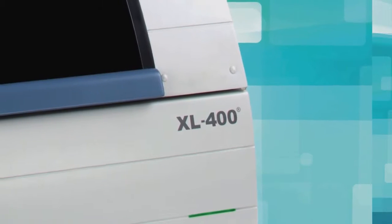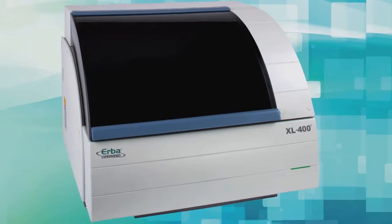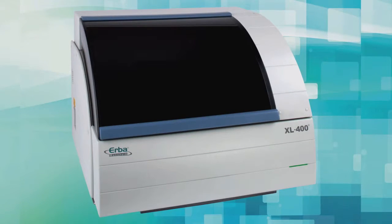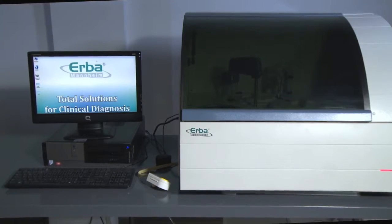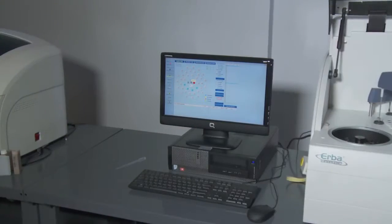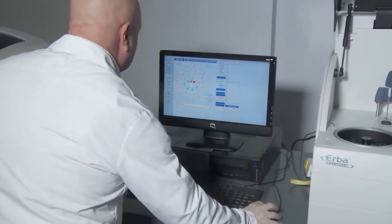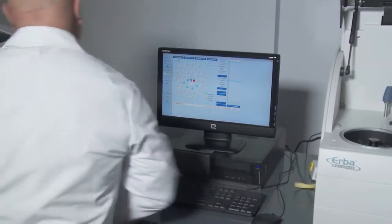The Erba Diagnostics XL 400 is a fully capable walk-away chemistry analyzer with throughput of 400 tests per hour. With a small footprint in the lab, this versatile high-precision analyzer can run 50 different tests and is ideal for both small labs and doctors offices.